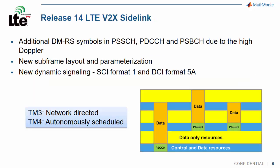LTE Toolbox supports V2X transmission and reception, including the higher DMRS density, new resource pools, and signaling. Similarly to direct communications, there are two modes for resource allocation: transmission mode 3 for network-directed, and TM4 for autonomous selection.